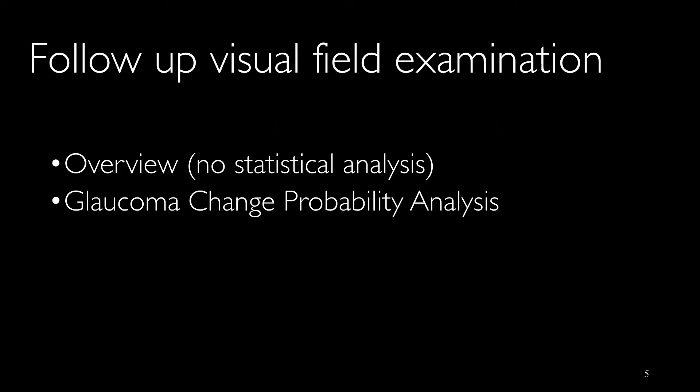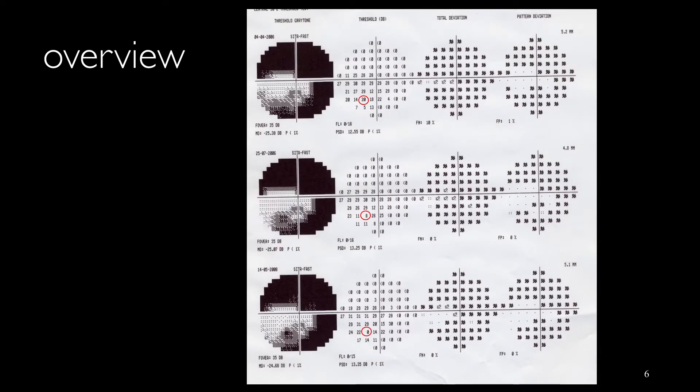In this presentation, I'm going to talk about the overview printout and glaucoma change probability analysis. In the overview printout, we have gray scale, numeric map, total deviation, and pattern deviation. We can compare all of these maps with each other.